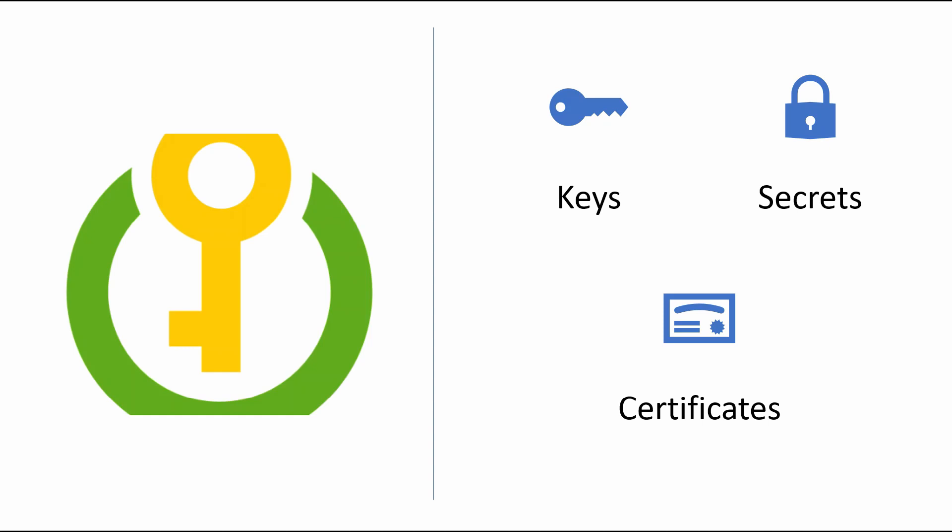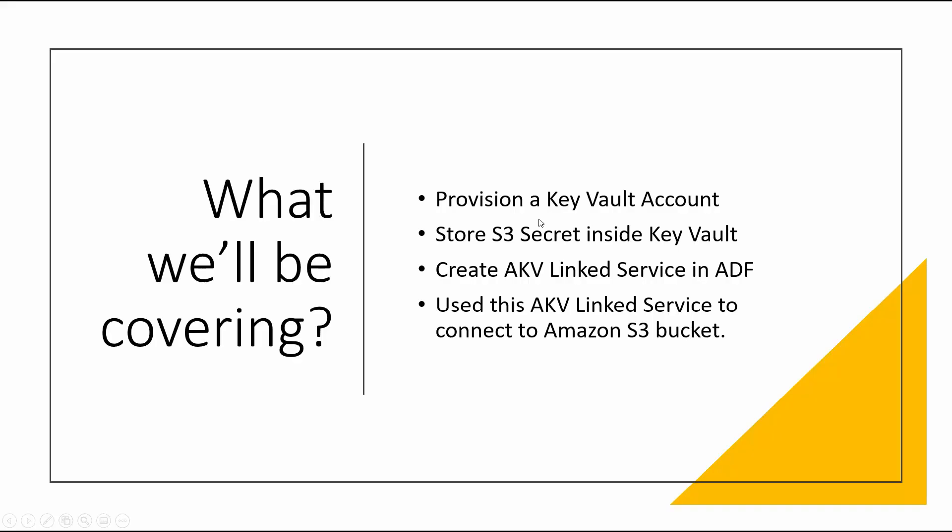In terms of what we will be covering today: we'll start with provisioning an Azure Key Vault account from scratch. I'll take you through the properties required to create a new Key Vault account. Then we will try to save the Amazon S3 bucket's secret inside this Key Vault account, and then jump onto ADF and try to establish a connection using this secret that we've just created. Now having set the agenda, let's jump onto the practical and explore all of these points in action.